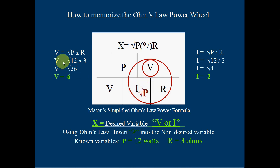So the square root of P times R is equal to the square root of 12 times 3, which is 36. The square root of 36 is 6 volts. So we've got 6 volts with this.